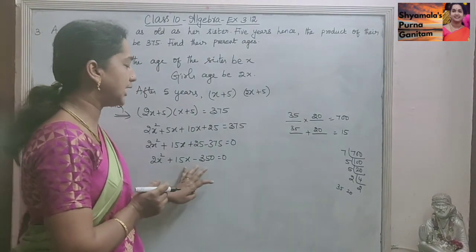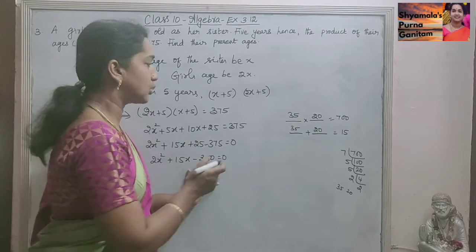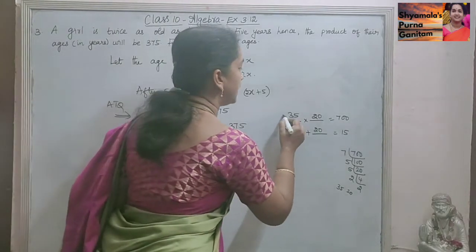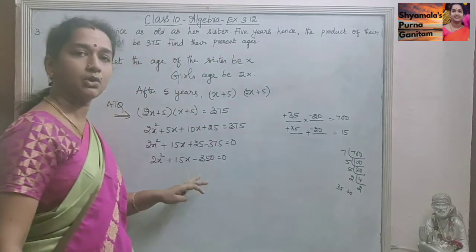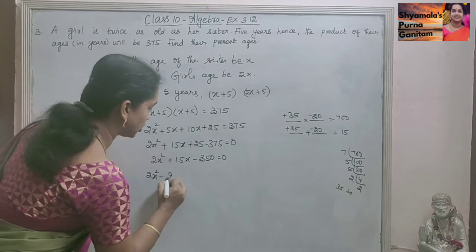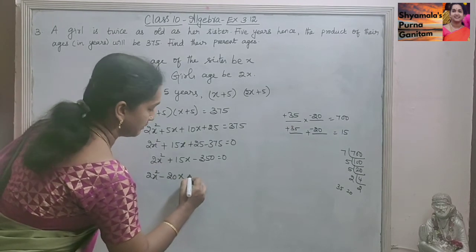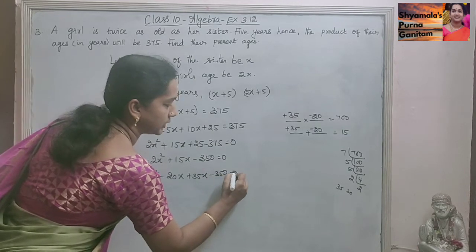So here plus 15 and minus 350. That is minus 700 we need to get. So the bigger number sign should be positive and the smaller number is negative. So 2X squared minus 20X plus 35X minus 350 is equal to 0.